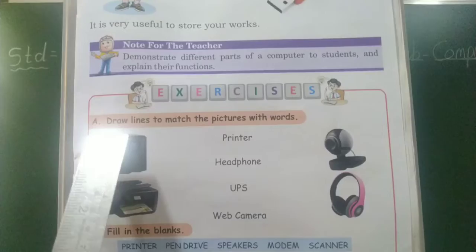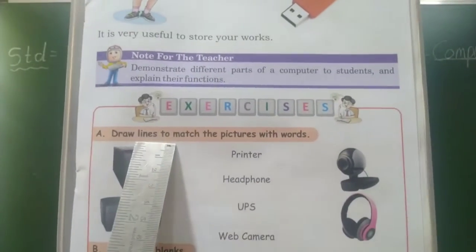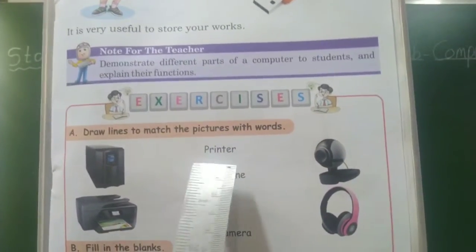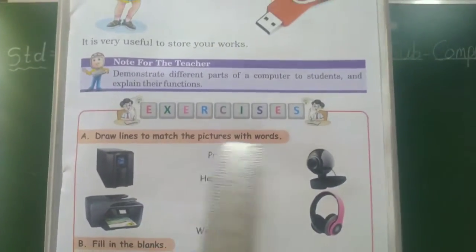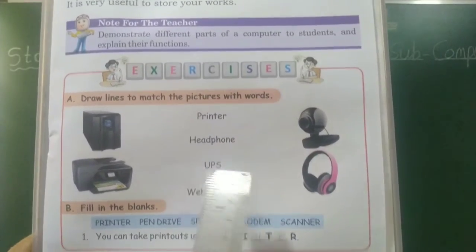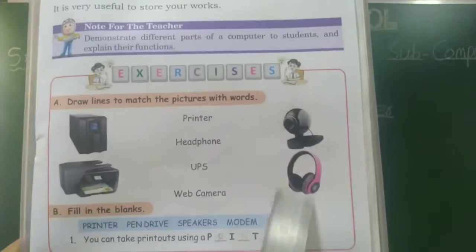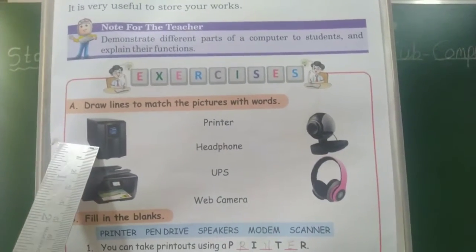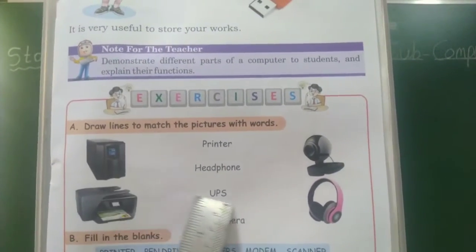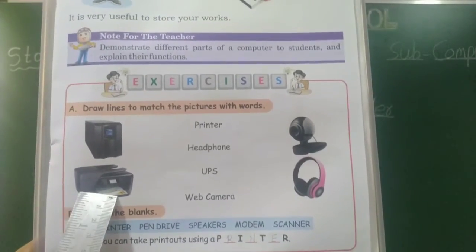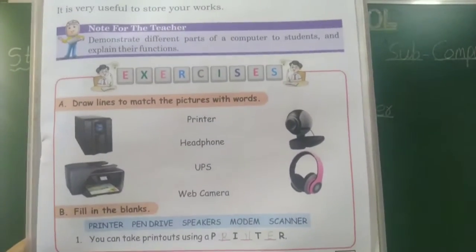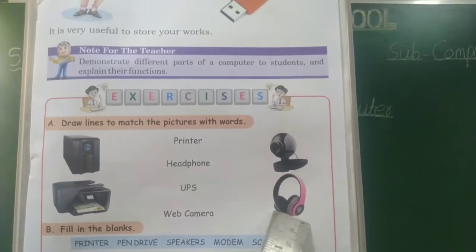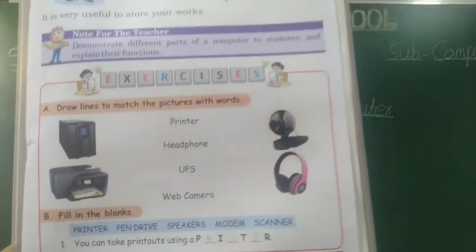Exercise: Draw lines to match the pictures with words. The words are printer, headphone, UPS, and web camera. This is a UPS — match with UPS. This is a printer — match with printer. This is a web camera — match with web camera. This is a headphone — match with headphone.